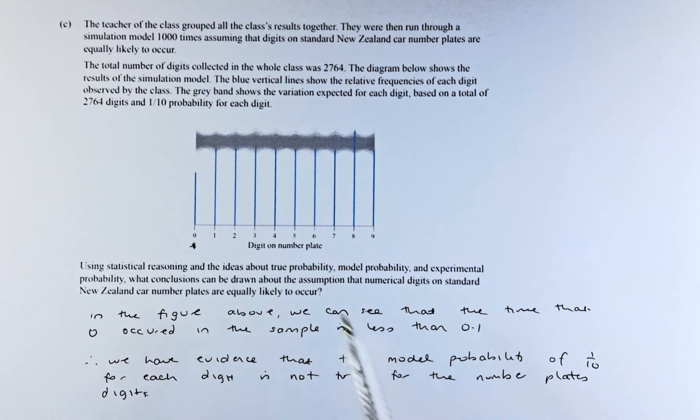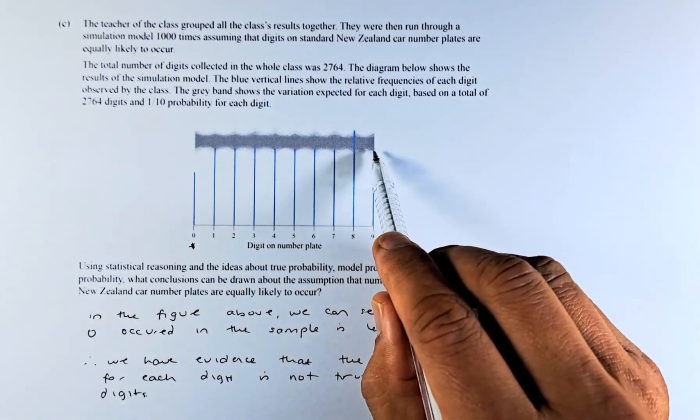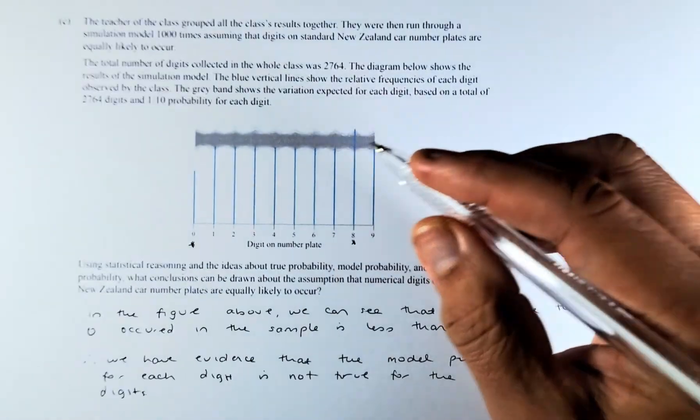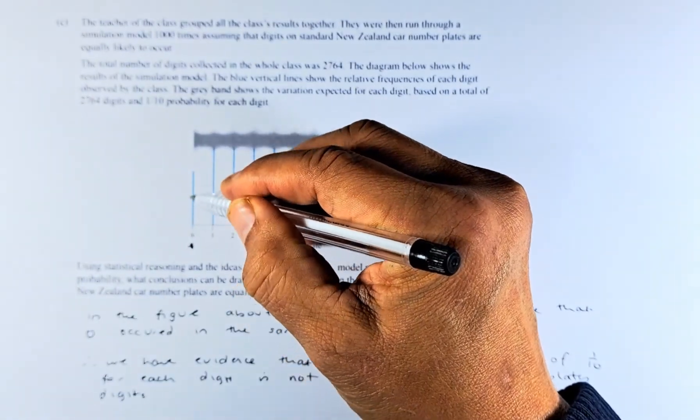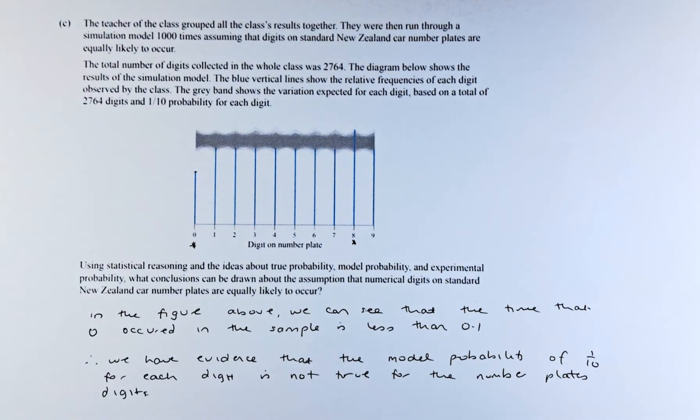So we are going to look at this graph and you look carefully. Most of them are at 1/10 except this part here, number 8 and number 0. So at 0, the proportion is less than 0.1.